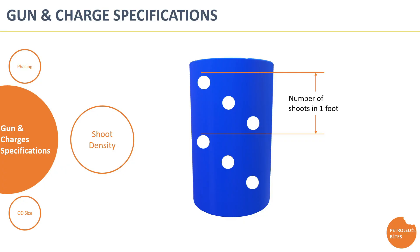The number of shots is directly proportional to the expected flow rate. The selection of shooting density depends completely on the objective of the perforation job — either to maximize flow rate or to limit it. In some operational applications like limited-entry hydraulic fracturing or sand production control, lower shooting density is highly recommended.